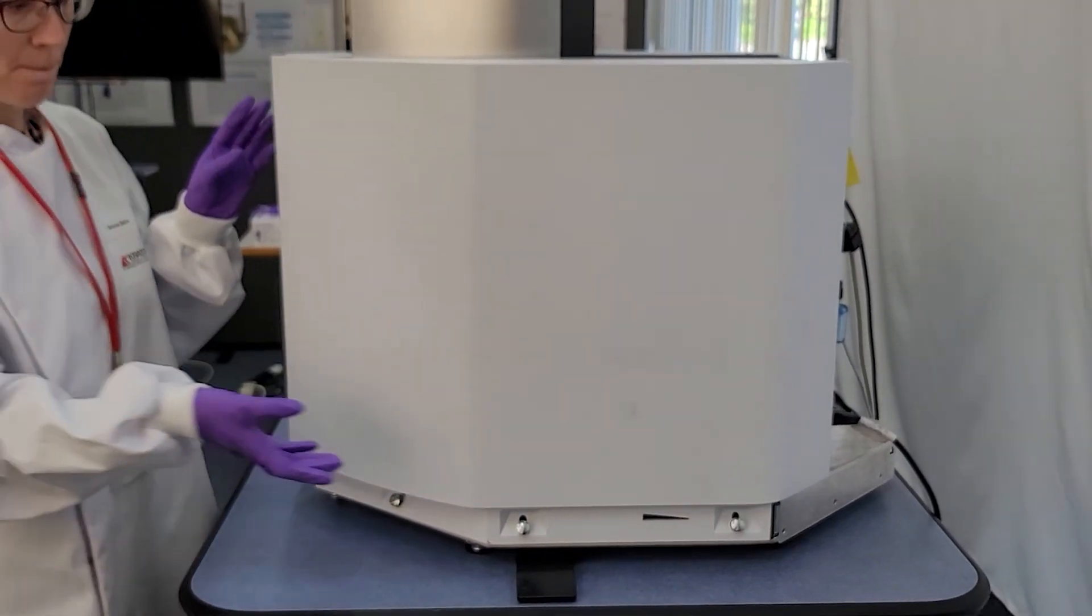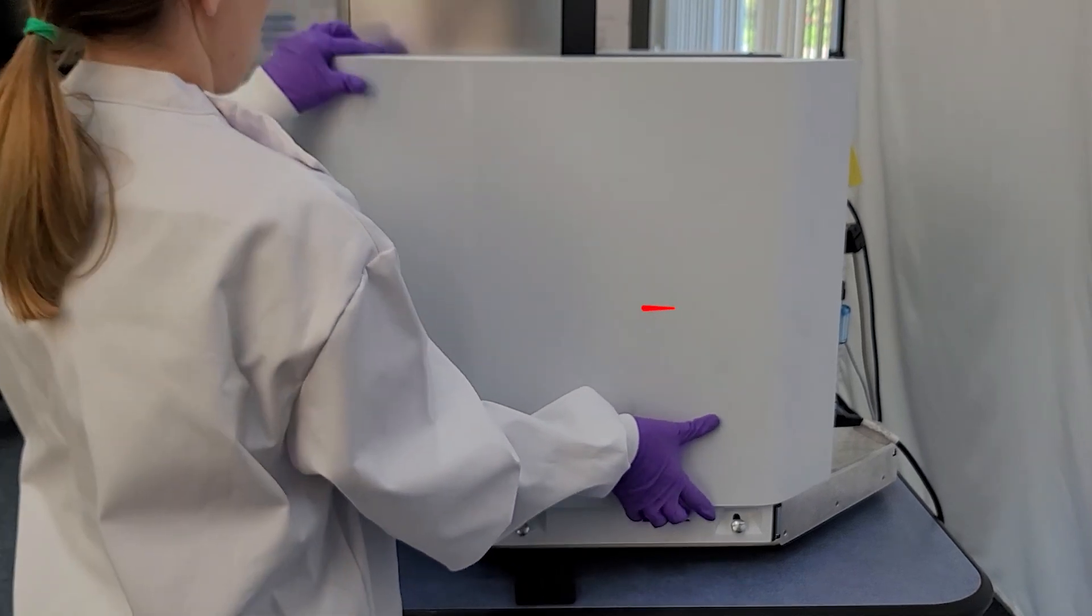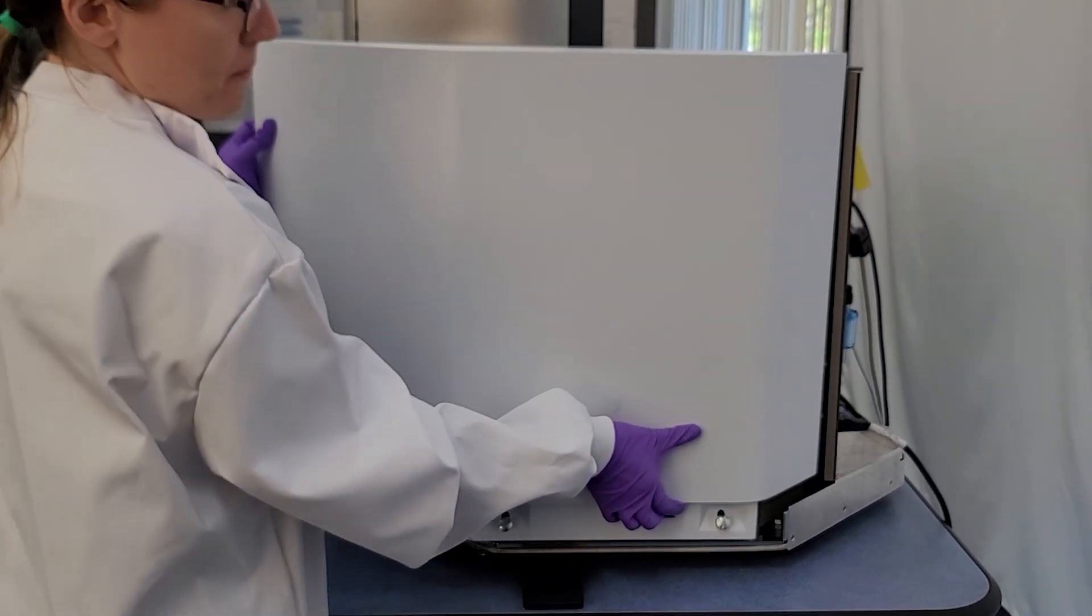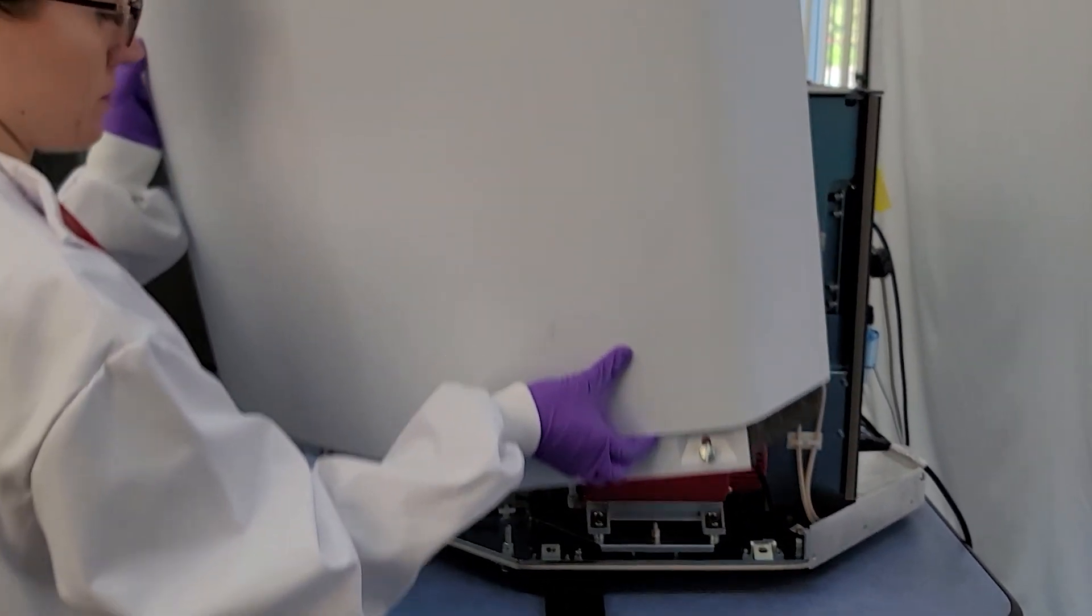Pull the right-hand cover forward slightly to disengage the locating tabs, then lift the right cover from the instrument chassis. Store the cover somewhere safe.